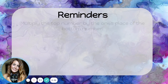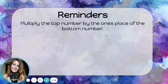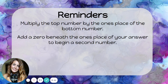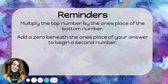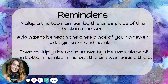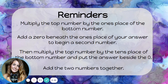Here are some reminders. Multiply the top number by the ones place of the bottom number. Then add a zero beneath the ones place of your answer to begin a second number. Multiply the top number by the tens place of the bottom number and put that answer beside the zero. Finally, add the two numbers together. Remember, any time you get a two-digit number when you multiply, you'll have to carry the tens — and then just don't forget to add them in later.